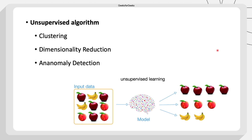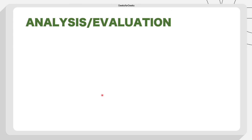Then comes unsupervised algorithms — examples include clustering, dimensionality reduction, and anomaly detection. In these cases, the data inputs are not labeled. The model doesn't know whether it's an apple or a banana; it just predicts that certain data points are similar and clusters them together. It cannot assign a label because we don't have any labels, which is why it's called unsupervised.